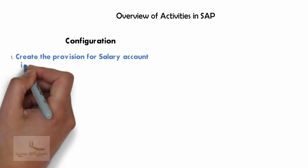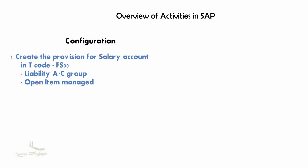First, we create the provision for salary account using T-code FS00. We create it under the liability account group because all provisions related to expenses will be liability. While creating this GL account, we will make the settings as open item managed.